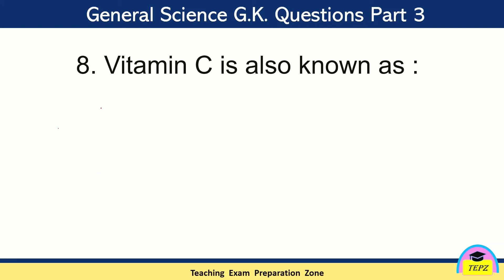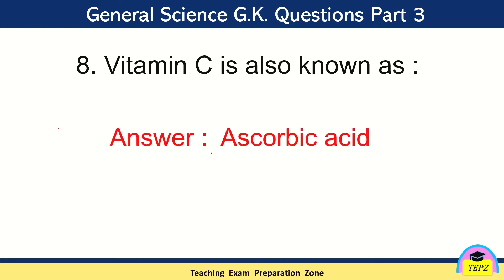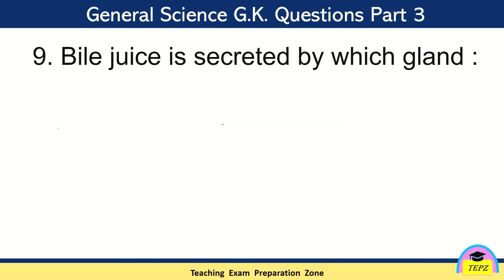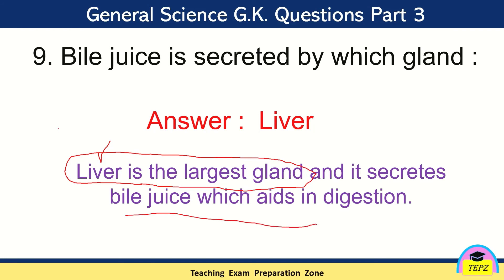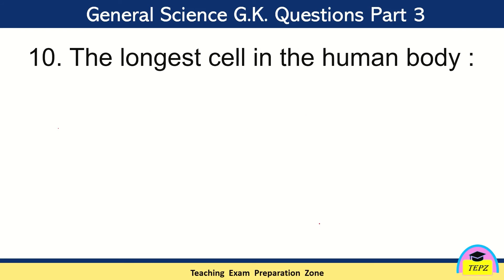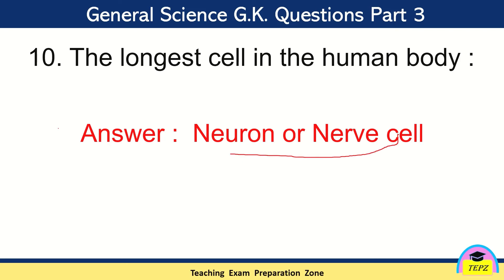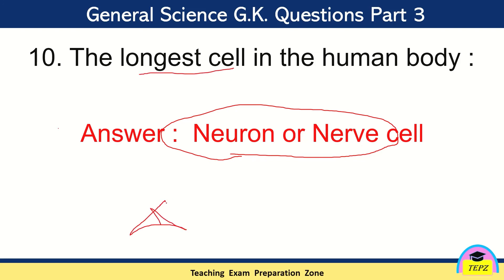Vitamin C is also known as ascorbic acid. As covered in the last video, Vitamin B is called riboflavin and Vitamin C is called ascorbic acid. Bile juice is secreted by the liver — and a very important point: the liver is the largest gland in our body, and it secretes bile juice which helps in digestion. The longest cell in the human body is the neuron, or nerve cell — this is a very important question asked in many exams.